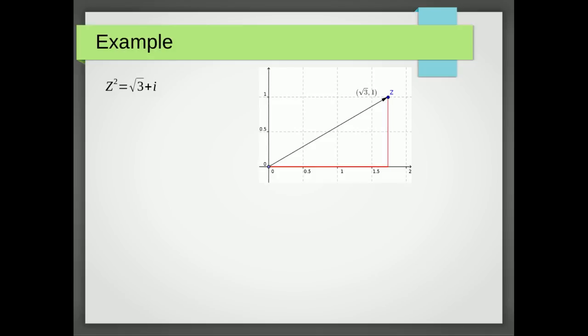Here's a representation of that on an Argand diagram, which is what we use to write the number in polar form. Polar form means we write it in the form R cis θ, where R is the modulus — the length of this line — and θ is the argument, which is the angle from here to here.